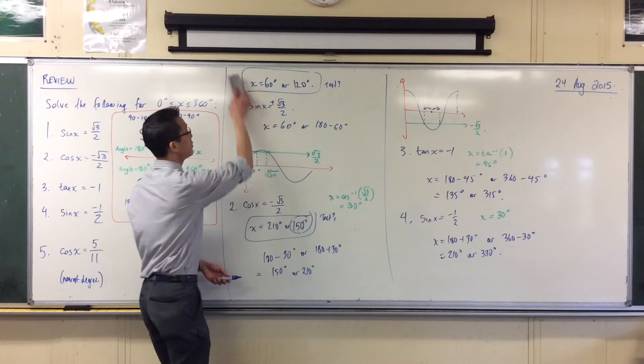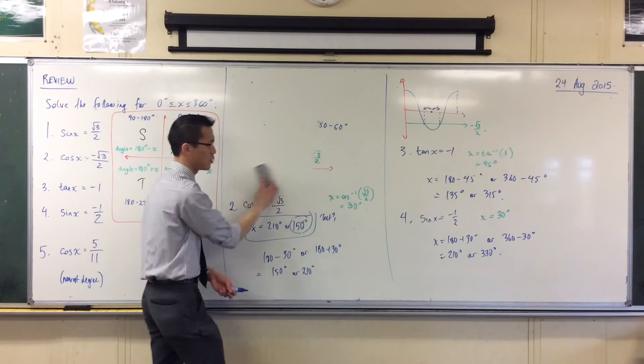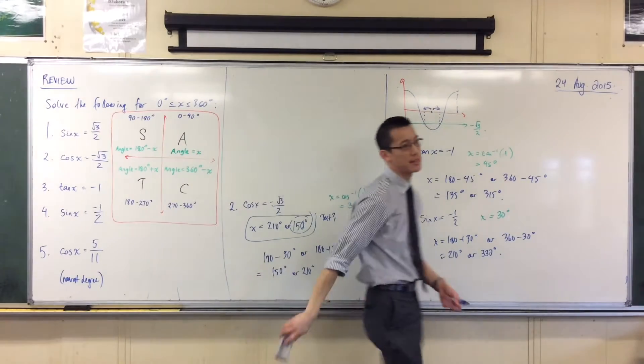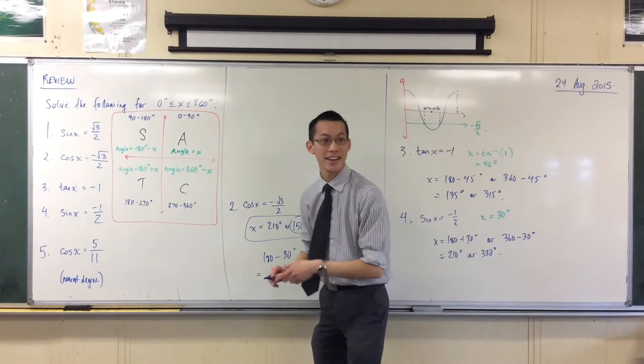The reason why I threw this guy in here is because you won't always get these exact value ones that I've been handing you. Right? 30, 45, 60 degrees, they're all nice and neat. That 5 over 11 there, that's just kind of a bit random, really. Sorry, yes?